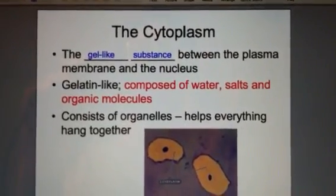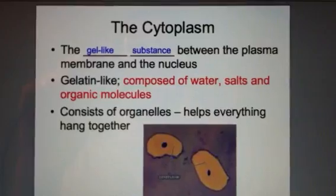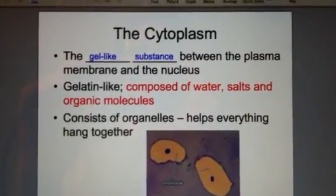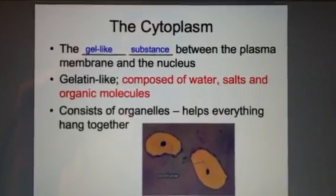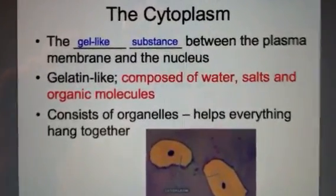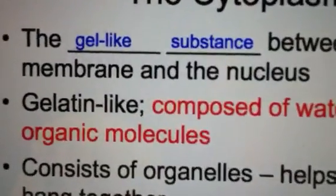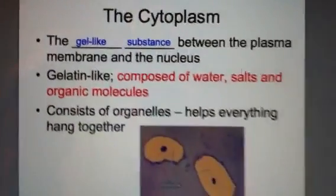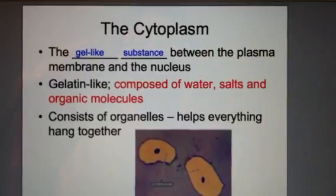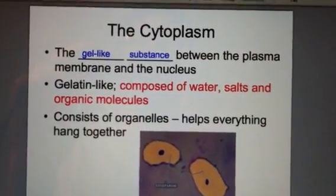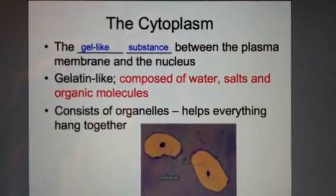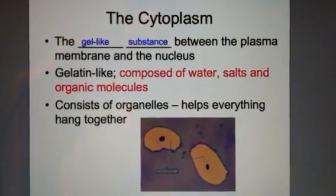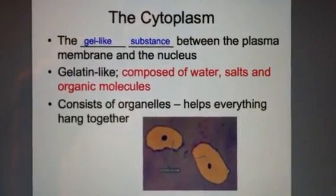Welcome back to Chapter 3, slides 7, 8, and 9. Starting with slide 7: the cytoplasm. This organelle is a gel-like substance between the plasma membrane and the nucleus. You're going to fill in 'gel-like substance' in blue on your notes. It's similar to gelatin and is composed chiefly of water, salts, and some organic molecules.